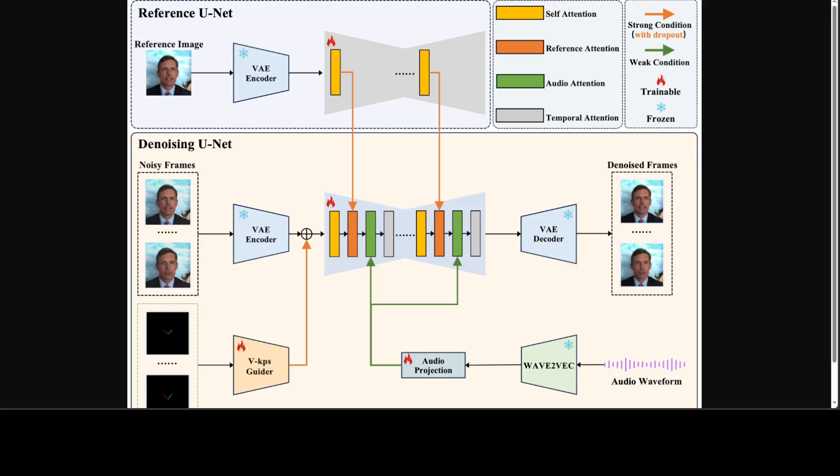VExpress incorporates three crucial modules: reference net, VKPS guider, and audio projection, all utilized to encode the reference image, the VKPS images, and the audio respectively. The pipeline is quite progressive with three stages: stage one focuses on single frame generation, stage two focuses on multi-frame generation, and stage three also focuses on multi-frame generation but adds global fine tuning where all parameters are updated.